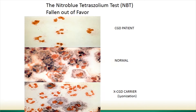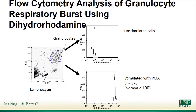The reason we tend not to use the NBT test anymore is because it's very subjective — it relies on someone reading it visually, and humans make errors. There have been cases where women are told they're not carriers and then go on to have a boy with CGD. It is still available and can be done, but it's not perfect.